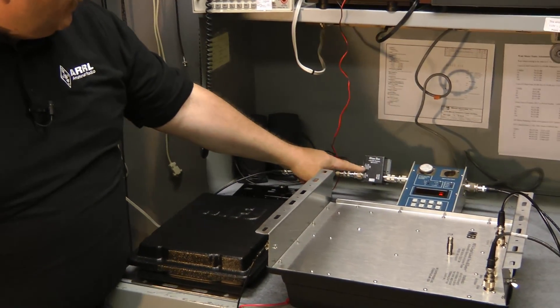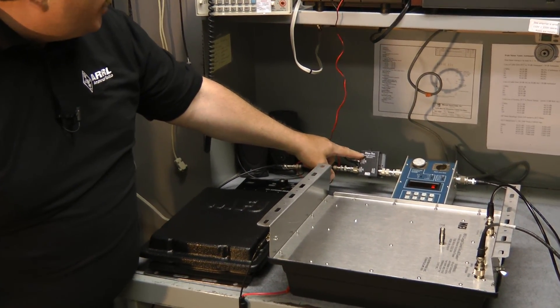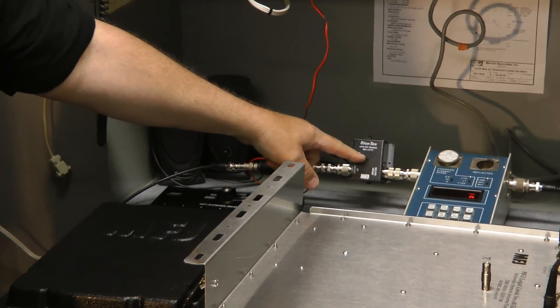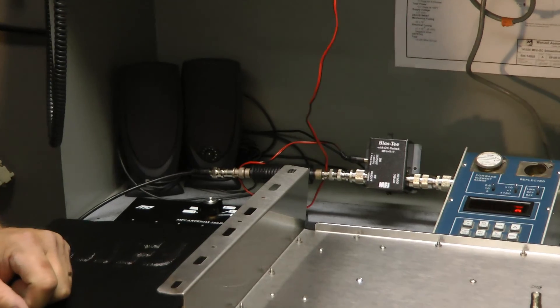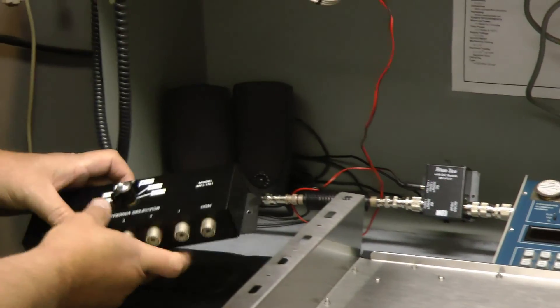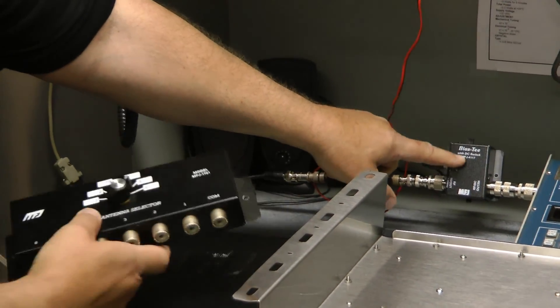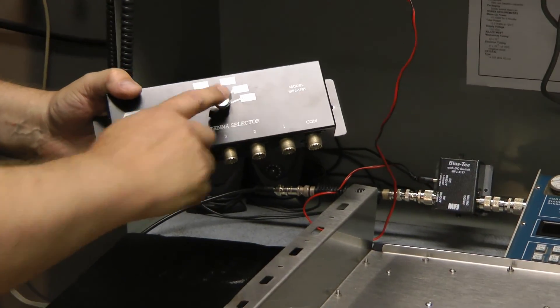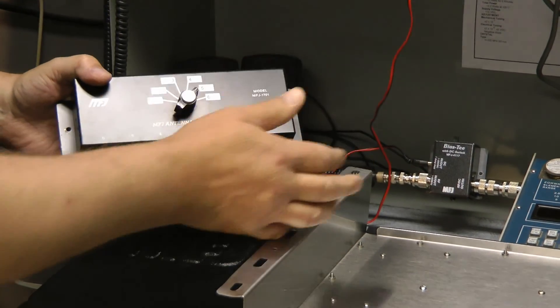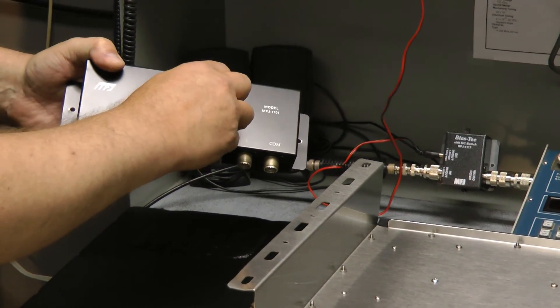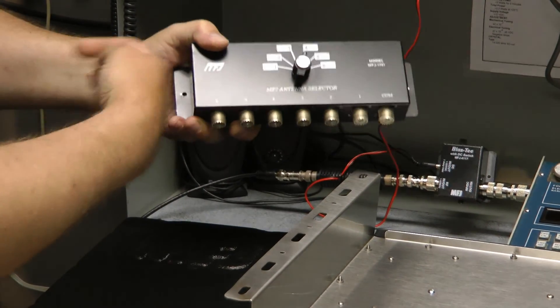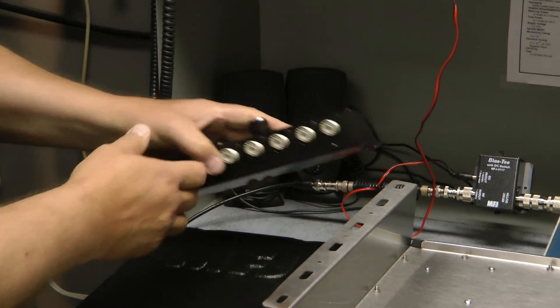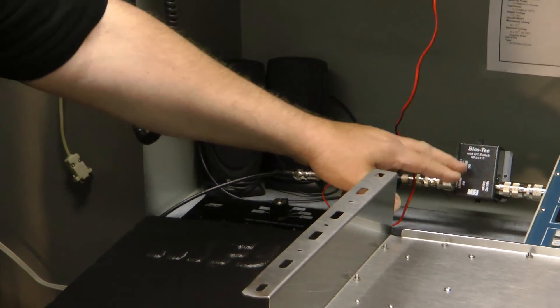This is called the bias T switch. And what this does, when you turn it on, it'll provide DC power down the coax to your antenna tuner. Now, it's really important. Make sure you put this bias T power supply after any kind of coax switch. Because when you switch away from this automatic antenna tuner, that port will ground. And if the bias T is on this side of the switch, it'll short out, and it'll burn up the bias T DC switch. So please remember that.